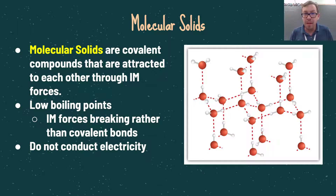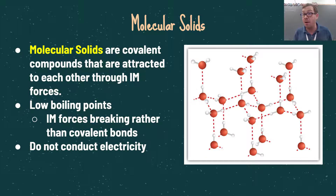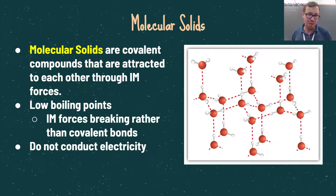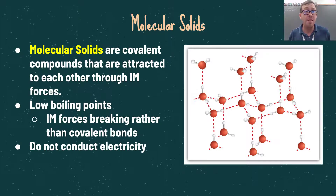Molecular solids are different from covalent network solids. They are also covalent compounds; however, the individual constituent parts are attracted to each other through intermolecular forces rather than intramolecular forces. As a result, they have lower boiling points than covalent network solids or ionic solids, because when you melt or boil molecular solids you're breaking the weaker intermolecular forces, giving them lower melting and boiling points.